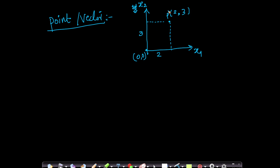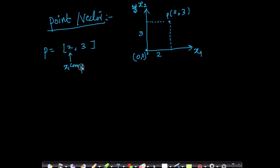I represent a point using a vector. I can write my point P as a two-dimensional vector with components 2 and 3. Note the terminology: this is called the component of a vector — specifically, the x1 component and the x2 component of your vector.